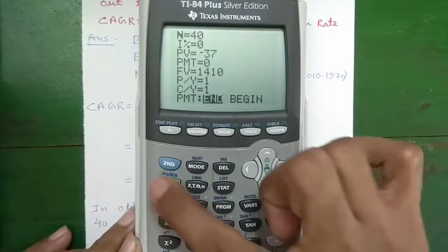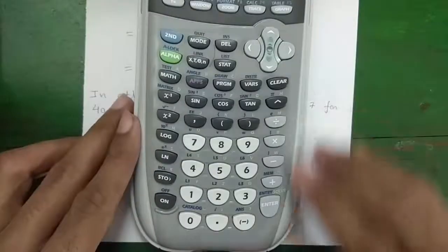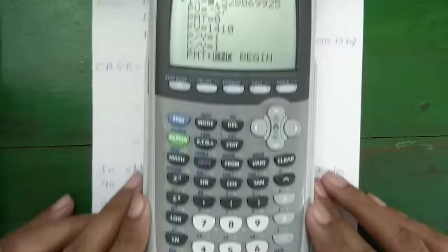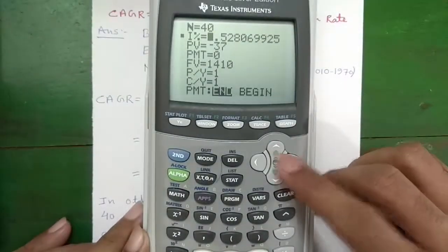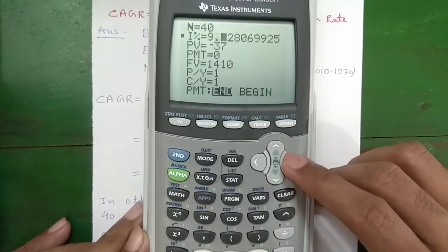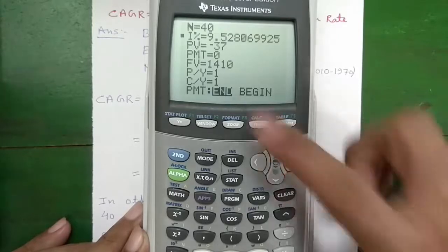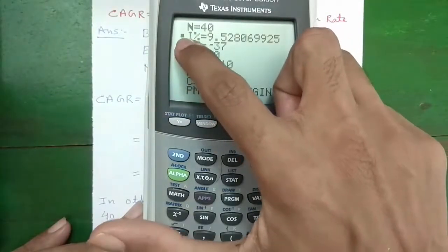After that we'll scroll up and we'll highlight the I which we want to find out and press alpha and the enter or solve button. So we'll solve for I or percentage. So the CAGR percentage is 9.52 percent. You can see the I is calculated, that's why there is a dot.